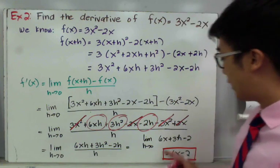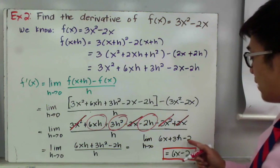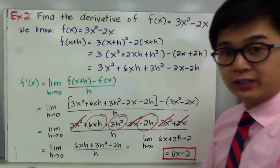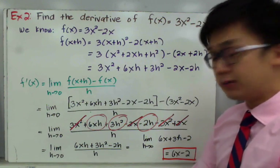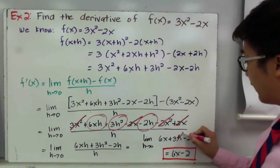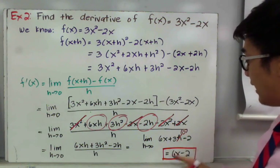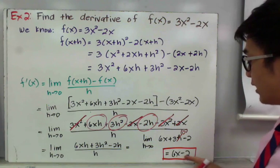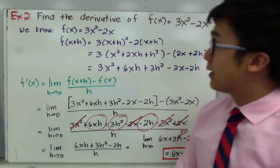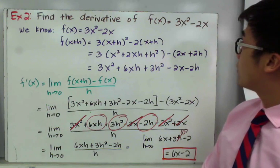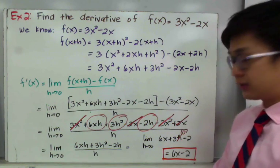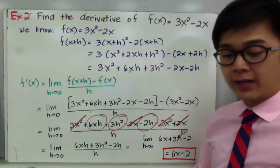We are left with 6x plus 3h minus 2 as h approaches 0. By the substitution method, replacing h with 0 causes the 3h term to cancel out, leaving us with 6x minus 2. Therefore, the derivative of f of x equals 3x squared minus 2x is equal to 6x minus 2.